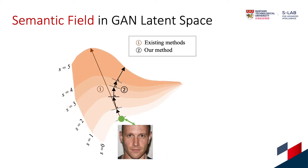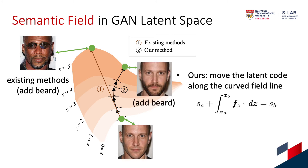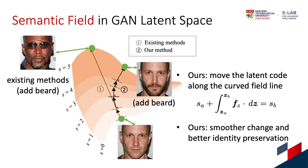However, existing methods assume that the walking trajectory in the latent space is always a straight line. This can result in poor identity preservation and poor photorealism. We argue that for each identity the direction might be different, and for the same identity at different attribute degrees the direction might also be different. Thus, we learn a location-specific semantic field in the latent space, and move the latent code along the curved field line to achieve facial editing. This gives us smoother change and better identity preservation.